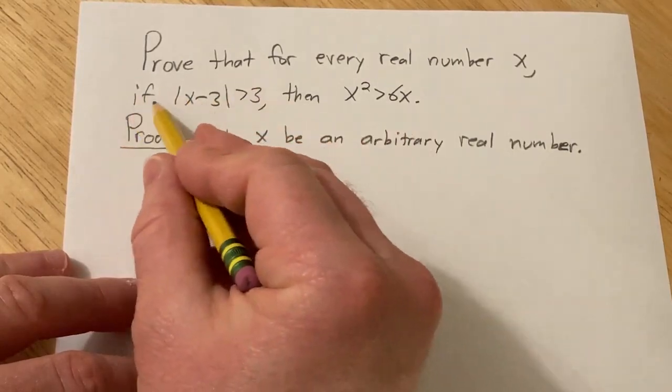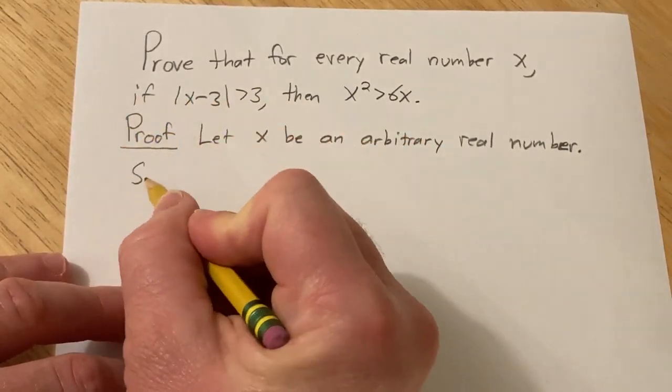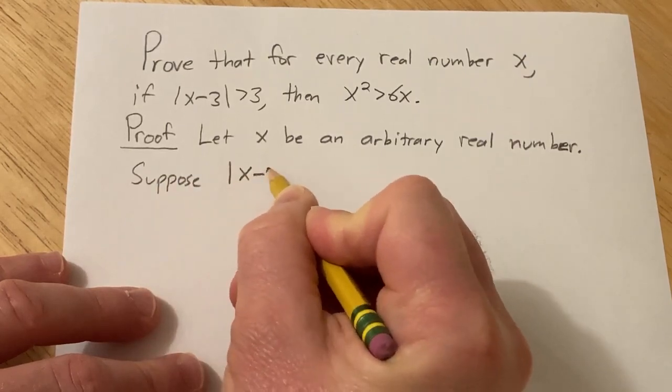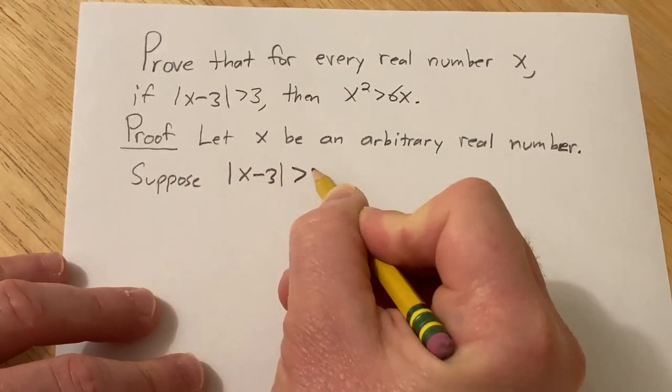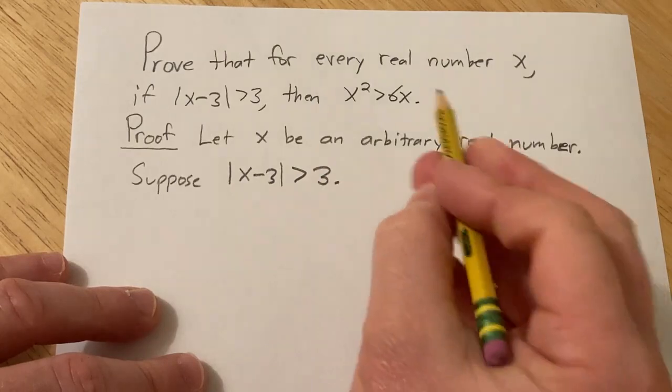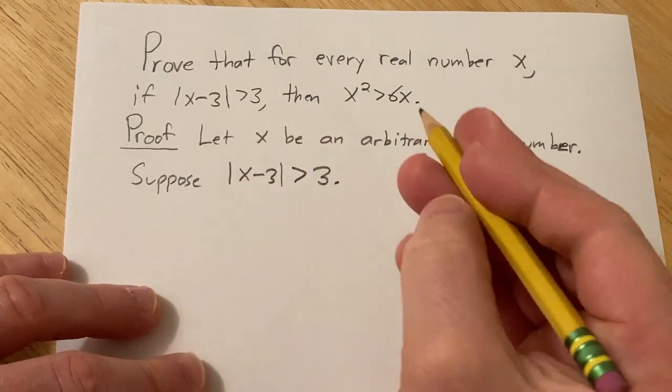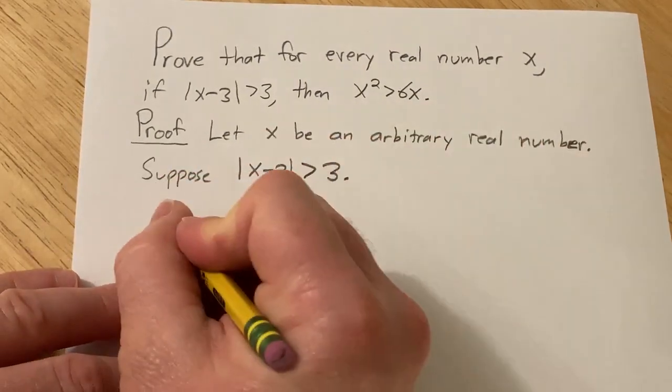And we get to assume this part. This is an if-then proof. So I'm going to say suppose that the absolute value of x minus 3 is greater than 3. And now we have to show that x squared is greater than 6x. So let's go ahead and take cases. So case 1.